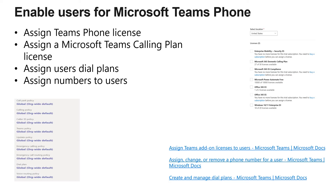For assigning phone numbers, pay special attention to any prerequisites for assigning phone numbers to users in Teams. What prerequisites do you need to meet before you can assign a number to a user? Also note any differences between assigning a phone number to a user enabled for direct routing versus operator connect versus calling plans. Make sure you're familiar with the interface — which prompts to select, which buttons to press — so that in a lab question, you know exactly which button to select to enable a certain feature.